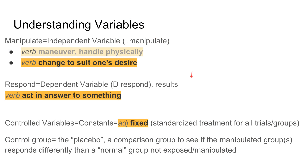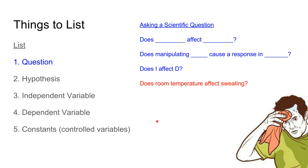First, let's talk about understanding variables. We have independent and dependent variables. I like to call the controlled variables 'constants' simply to make a distinction between controlled variables and a control group — that concept is a little new for freshman science. The dependent variable is basically the results of the experiment. We try to manipulate or change one thing to give us results, keeping all other things constant or the same in all trials.